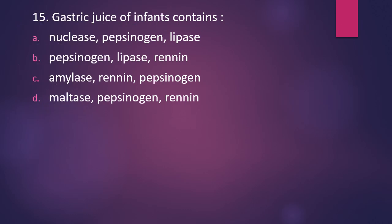Question number fifteen: gastric juice of infants contains which of the following enzymes? Options include combinations of nuclease, pepsinogen, lipase, renin, amylase, and maltase. Which set of enzymes is present in the gastric juice of small infants? The correct answer is option B — pepsinogen, lipase, and renin are the enzymes present in the gastric juice of infants.